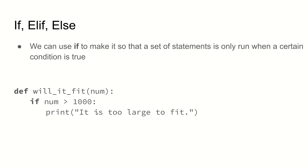For instance, this print here will only happen if the number that the variable num references is greater than 1,000. Then we will print out 'it is too large to fit.' So if we were trying to fit items into a room or a mailbox or something, we could use this kind of statement. This is a logical statement that can be true or false — either num is greater than 1,000 (true), or num is not greater than 1,000 (false). We're saying if it's true, then do the print underneath.